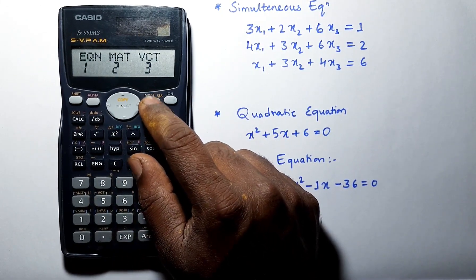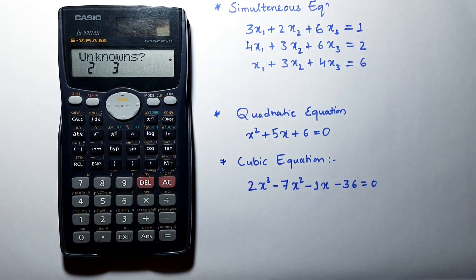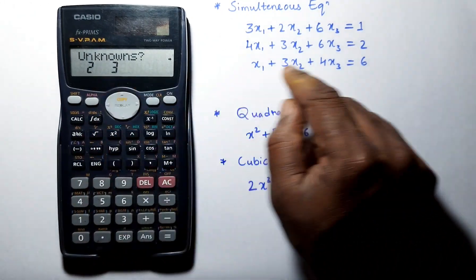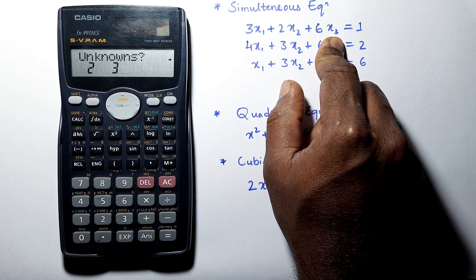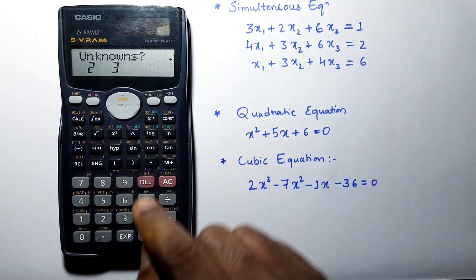Go to mode, select equations. Here we have 3 unknowns in this equations. We have 3 equations and 3 unknowns, so select 3.